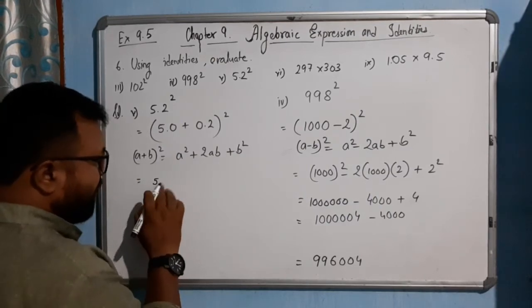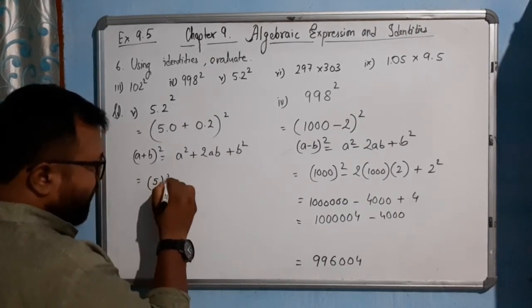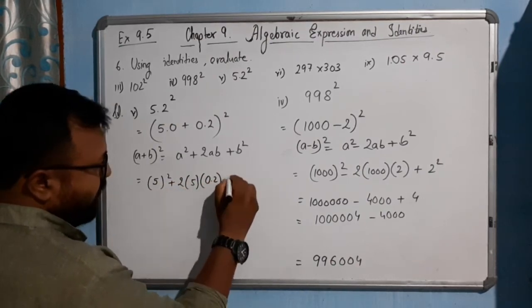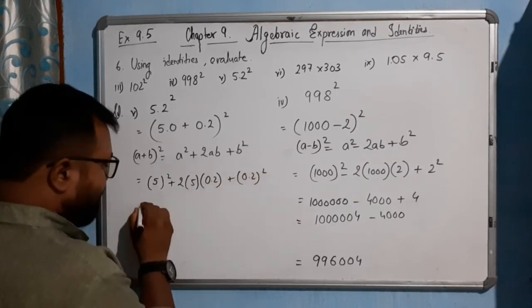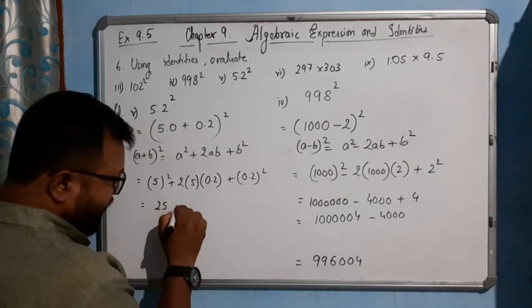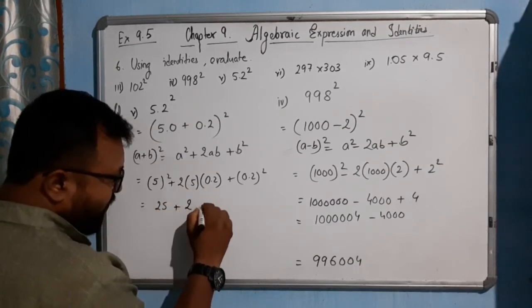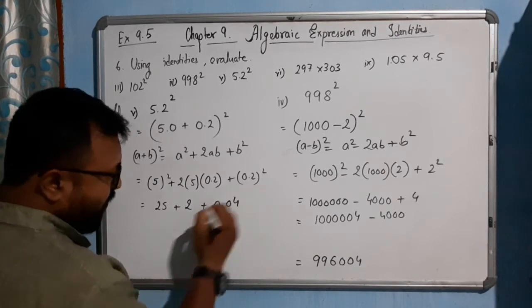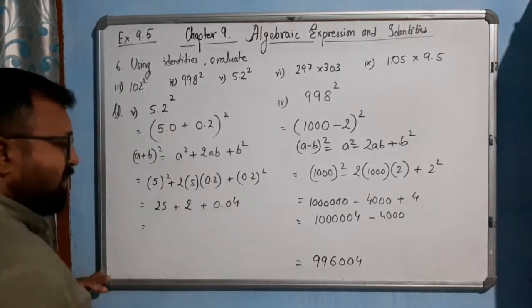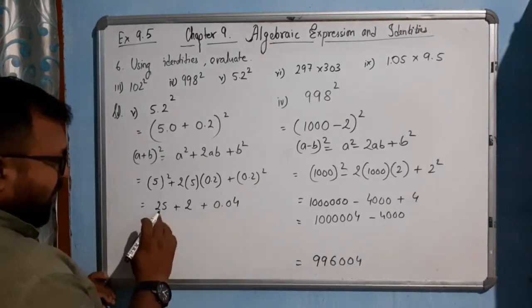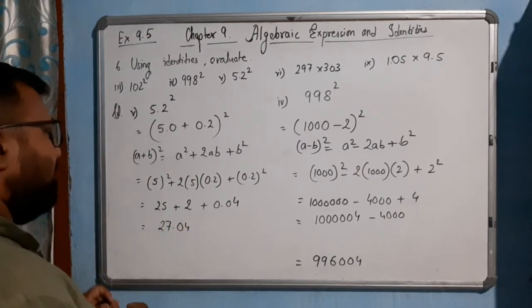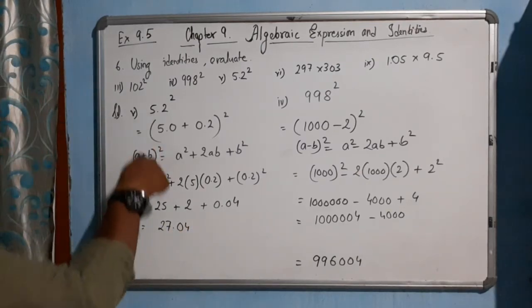So it will look like 5 whole square plus twice 5 into 0.2 plus 0.2 whole square. It will be 25 plus 2 plus 0.04. Two digits will be there after decimal, so 27.04. This is the answer of fifth one.